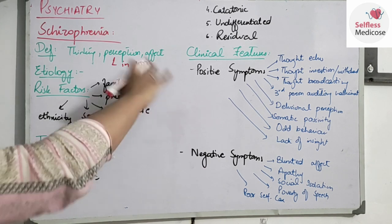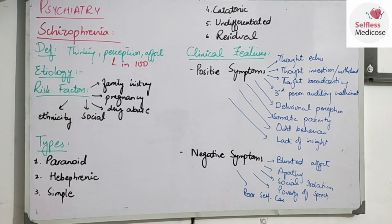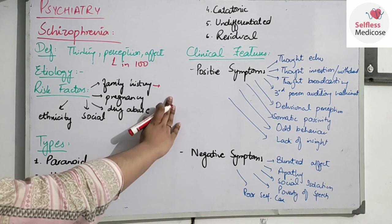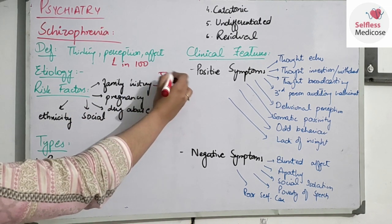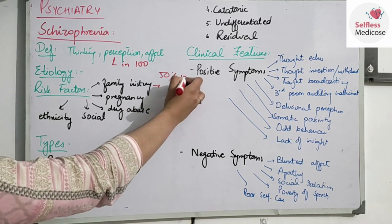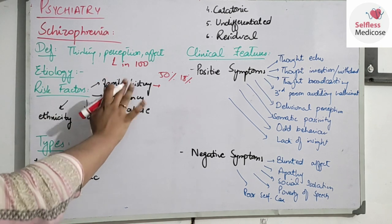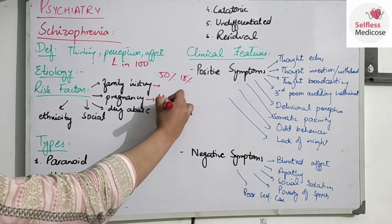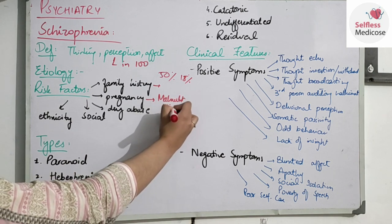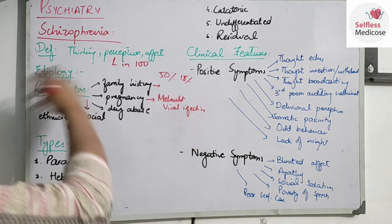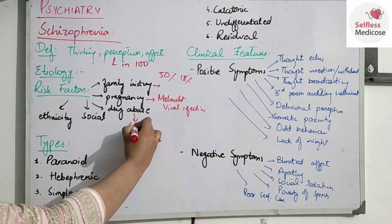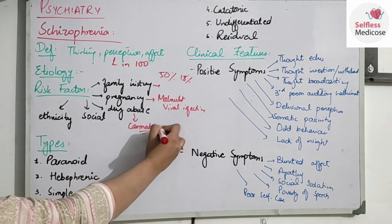The risk factors are very important. Family history is key — if someone in the family has schizophrenia, you ask if others are affected too, and most of the time it happens. For twins, if they are monozygotic the risk is 50%, and for dizygotic twins it is 15%. If a first-degree relative has schizophrenia, your risk is increased. In pregnancy, malnutrition or viral infections also increase the risk of schizophrenia later in life.